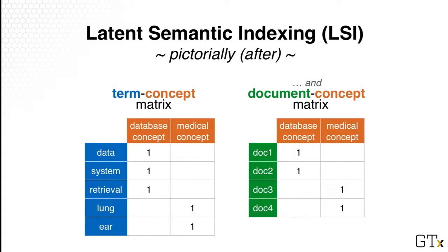And also LSI would tell us the weight. For example, in the first term concept matrix, those are what we call the term weight for each concept. And similarly, in the document concept matrix, we also have the weight for the document relative to the concept.